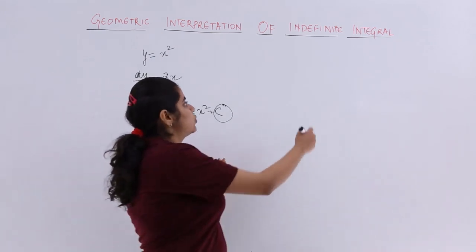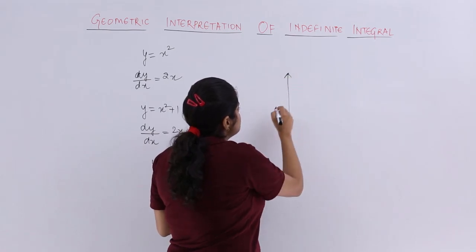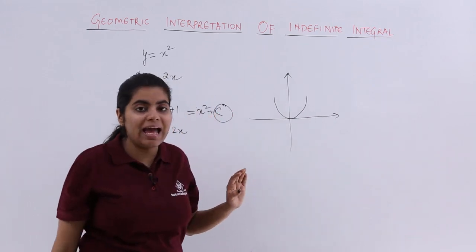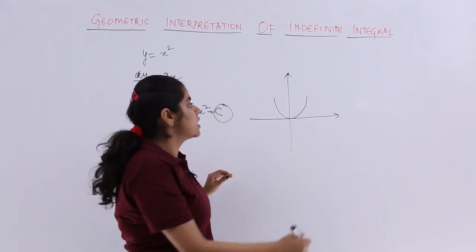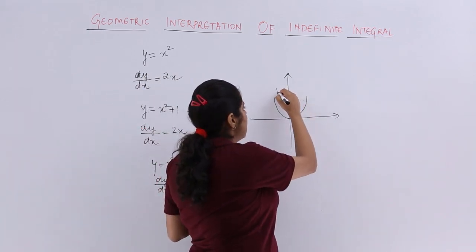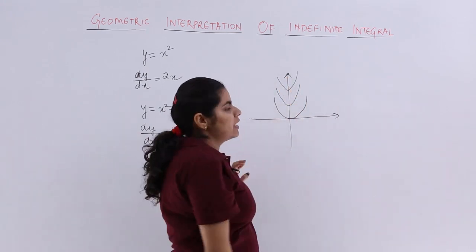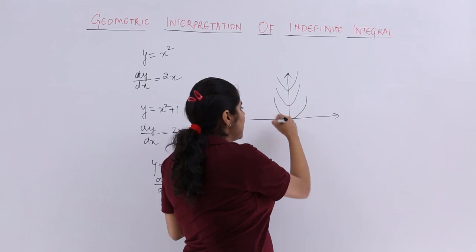So it is actually giving me curves and the family of the curves. This is y equals x square, this is y equals x square plus 1, this is y equals x square plus 2 and so on.